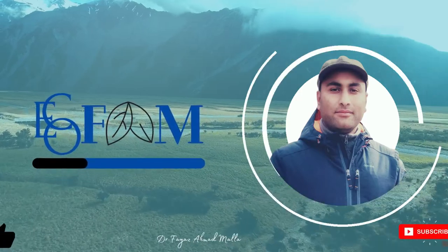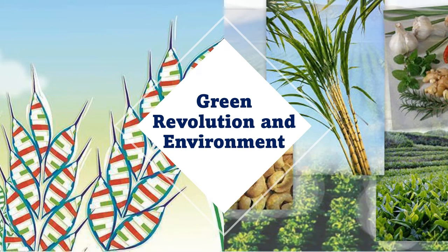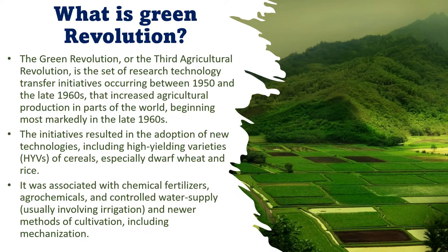Welcome dear learners, today we are going to discuss the green revolution in connection with the environment. The green revolution refers mainly to a dramatic increase in cereal grain yields in most developing countries. The green revolution, also called the third agriculture revolution, is a set of research and technology transfer initiatives that occurred between 1950 and the late 1960s, which increased agriculture production in parts of the world.